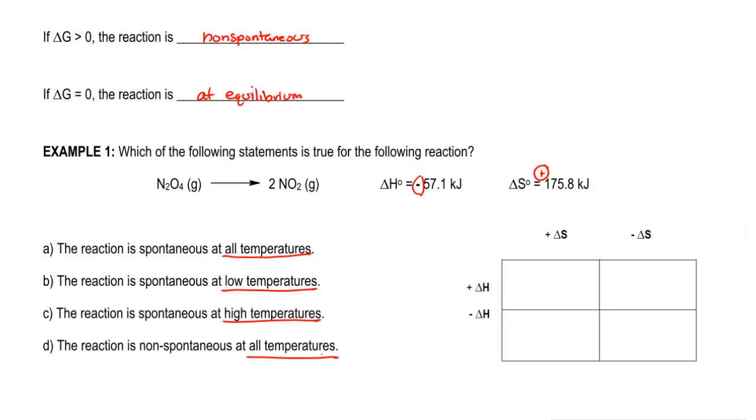Here we have our delta S values on top, they're positive and negative. On the sides, we have our delta H values, positive and negative.